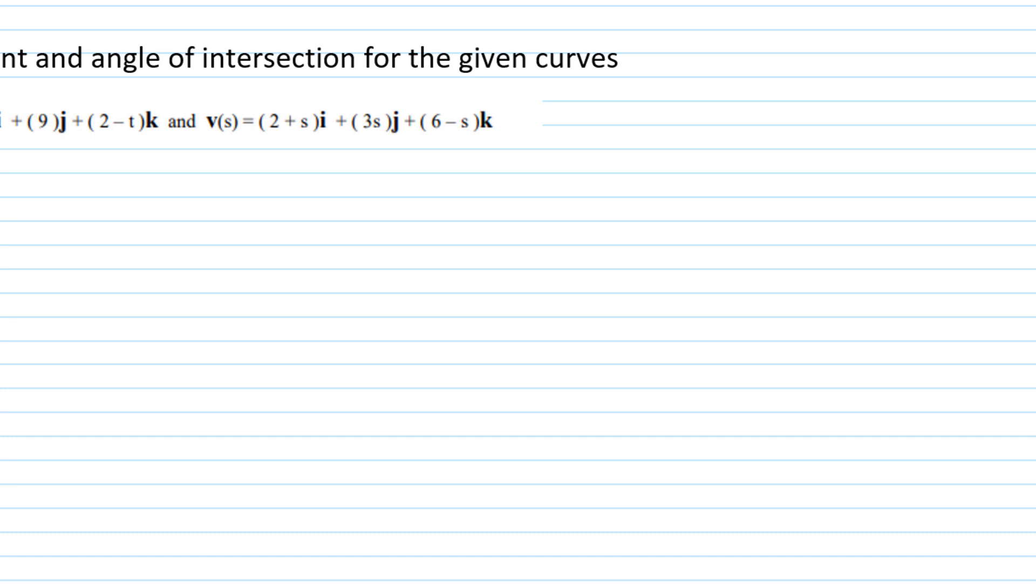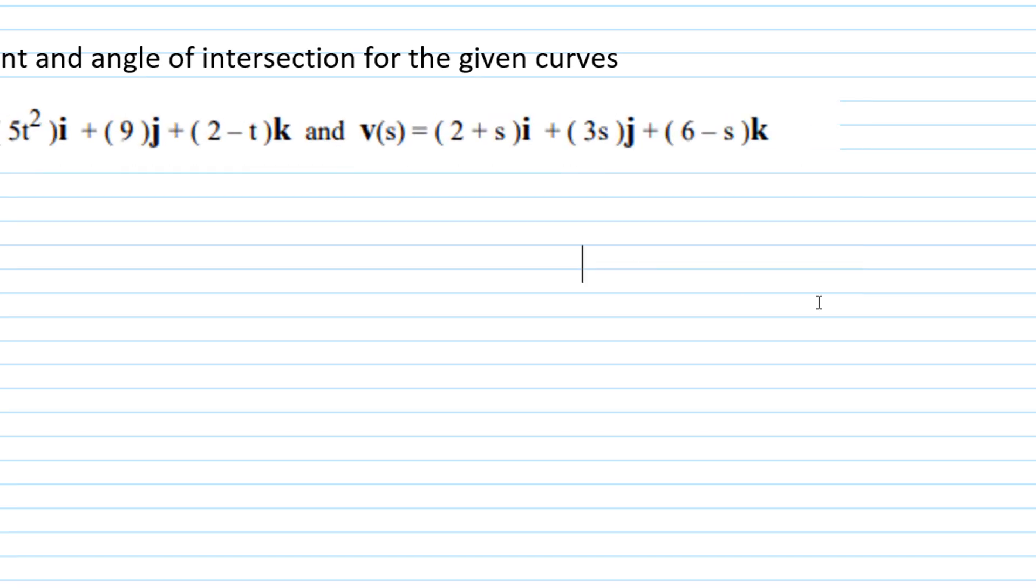In this exercise, which is taken from Contemporary Calculus by Dale Hoffman, we're going to find the point and angle of intersection for two vector-valued curves. We have u(t) equals 5t squared i plus 9j plus 2 minus tk, and v(s) is equal to 2 plus si plus 3sj plus 6 minus sk.